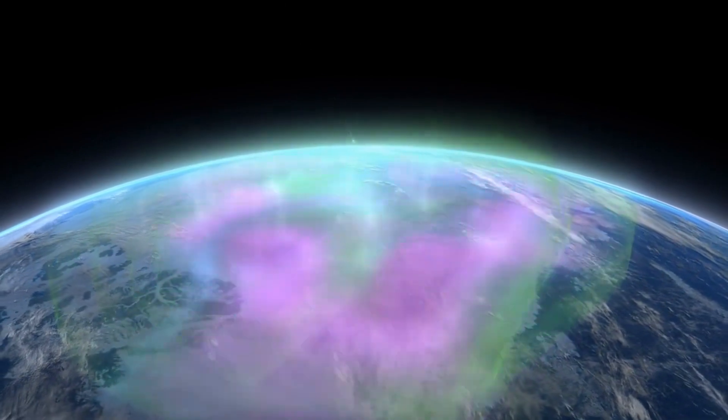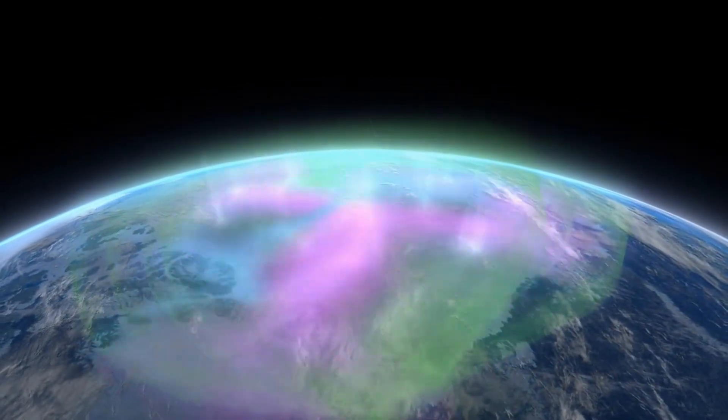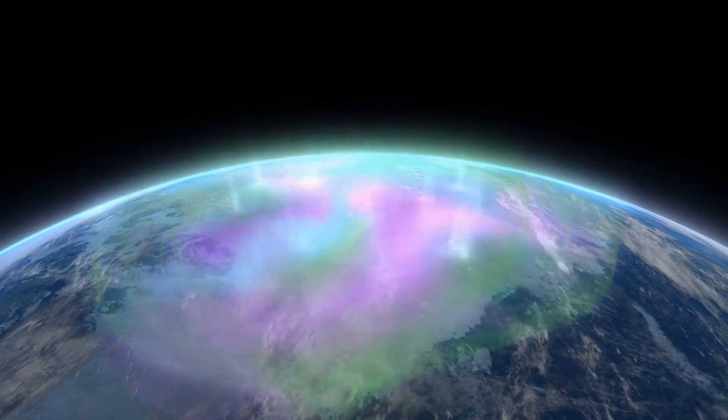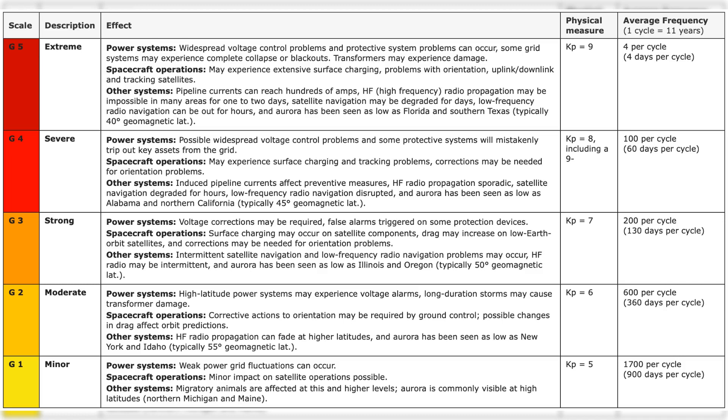As the CME meets Earth's magnetic field, we can expect some geomagnetic storms. The scale ranges from G1, minor, to G5, extreme, and this one is forecasted to cause G1 to G2 geomagnetic storms.